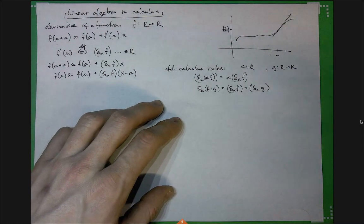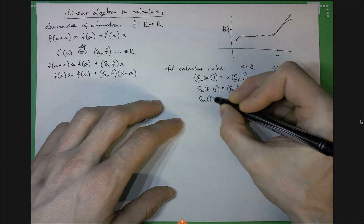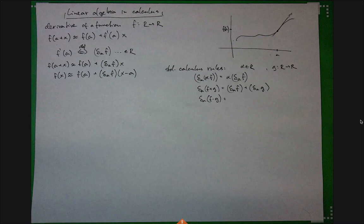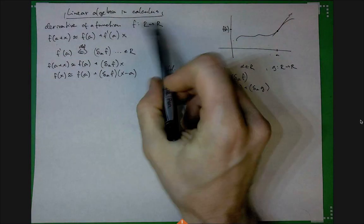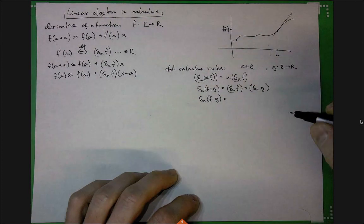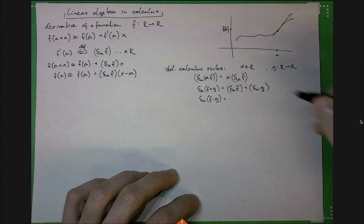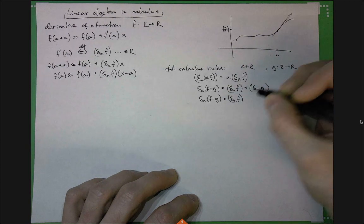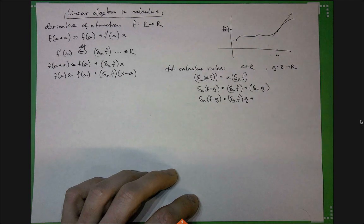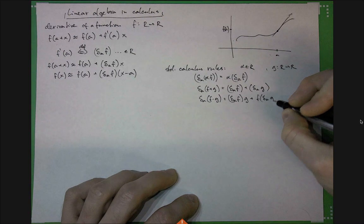Slightly trickier is the product rule — you must know that. If I take the product of two functions, the derivative of the product is: derivative of f times g(a), plus f(a) times derivative of g. At this point everything commutes, so the order doesn't really matter.